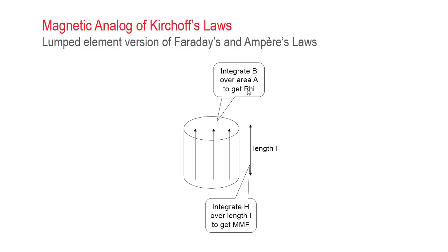We're going to use a lumped element version of Faraday's and Ampere's law. Instead of the continuous B field we're going to integrate over the area of the core material to get the flux phi. Instead of the applied H field we're going to integrate over the length of the coil to get the magnetomotive force.